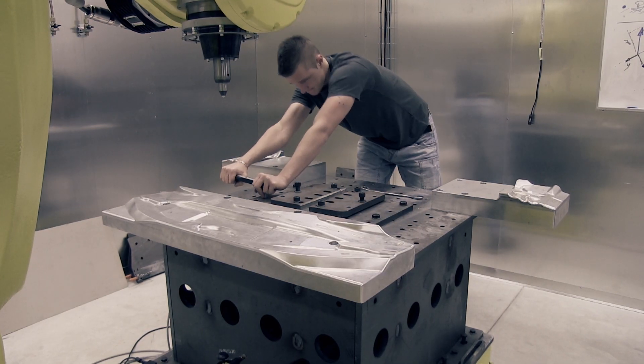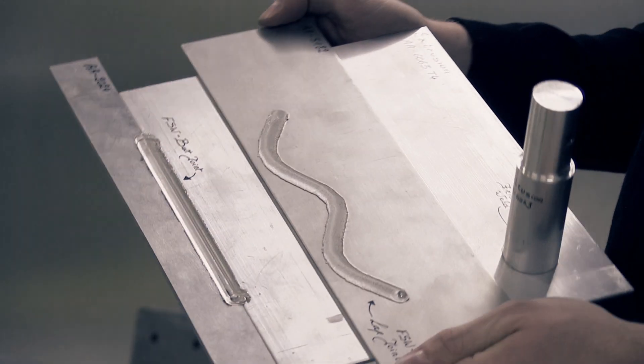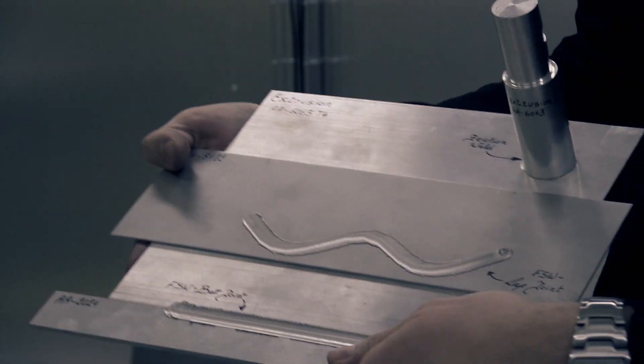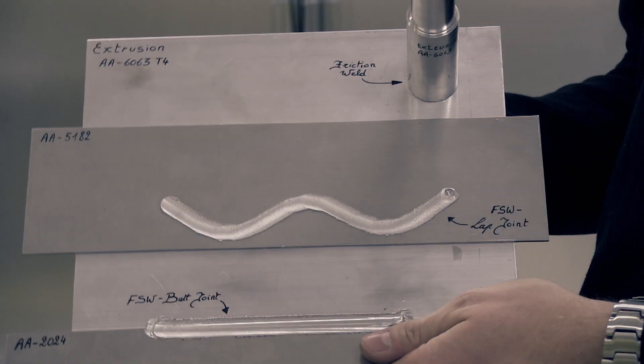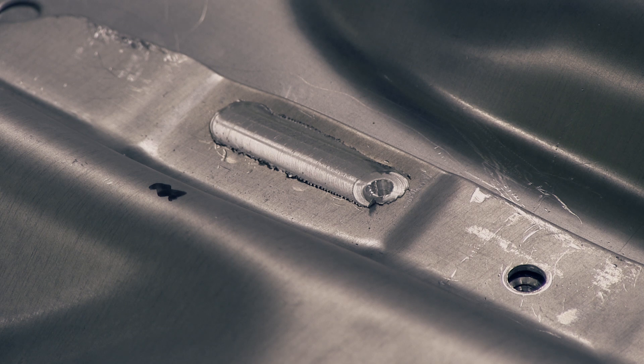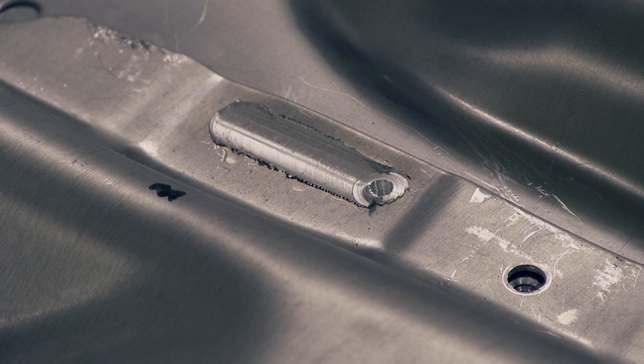With friction stir welding it is also possible to join different types of materials such as aluminum and magnesium. A friction stir weld is characterized by the circular pattern on the surface and the keyhole in the end.